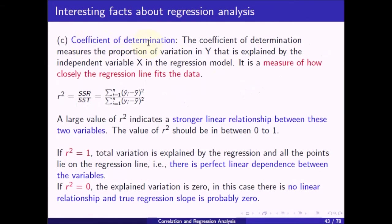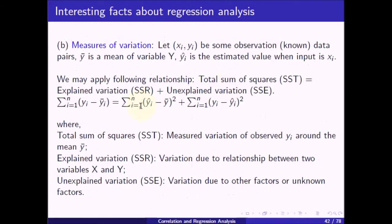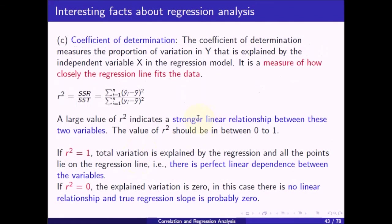The coefficient of determination measures the proportion of variation in y that is explained by the independent variable x in the regression model. It is a measure of how closely the regression line fits the data. R-squared equals SSR divided by SST, which is the summation of (yi-hat minus y-bar) squared divided by the summation of (yi minus y-bar) squared, for i from 1 to n.